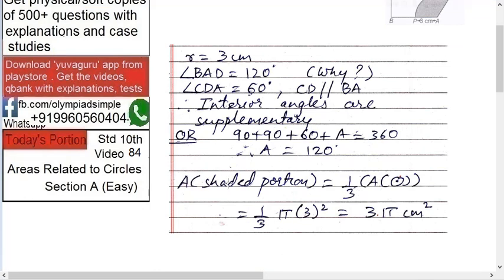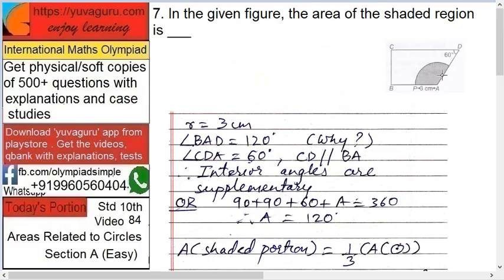Or 90 plus 90 plus 60 plus A equals 360, therefore A equals 120. So the area of the shaded portion is...